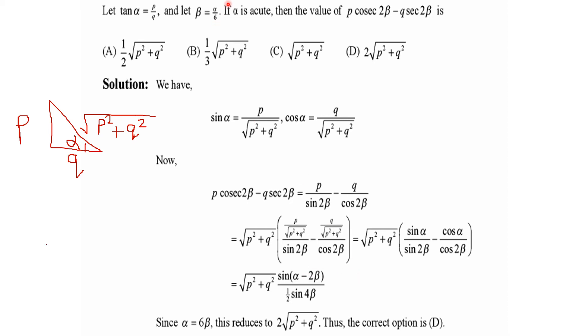So this is what we get. And since α = 6β, we replace it. Here we can make it sin 4β in the denominator. Sin 4β will cancel.